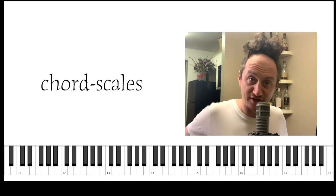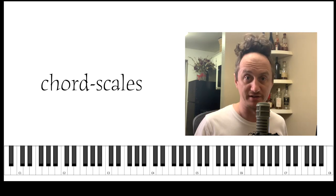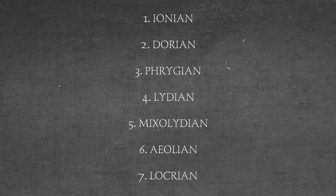There are seven natural chord scales, and here is the list in front of you: Ionian, Dorian, Phrygian, Lydian, Mixolydian, Aeolian, and Locrian. These are the seven classic Greek modes, the seven most commonly used modes or chord scales.